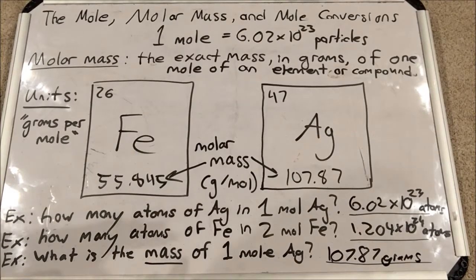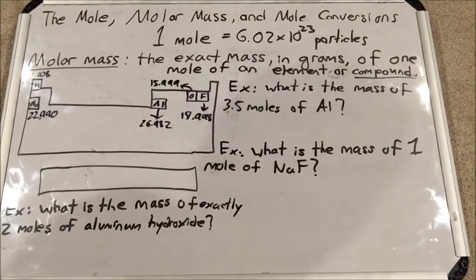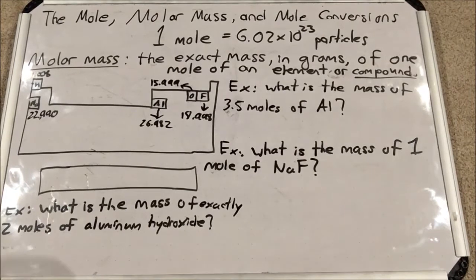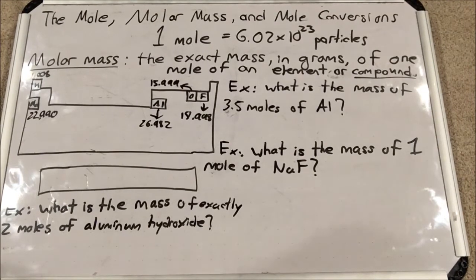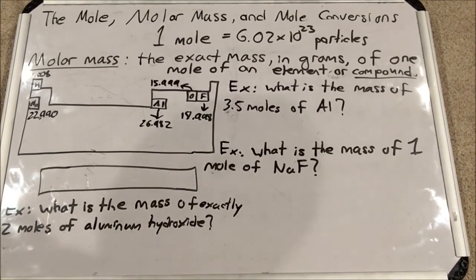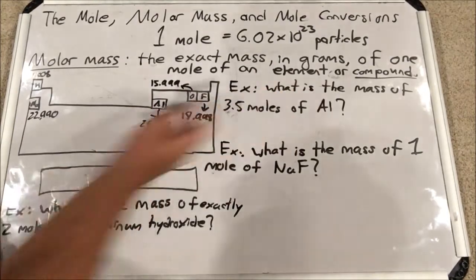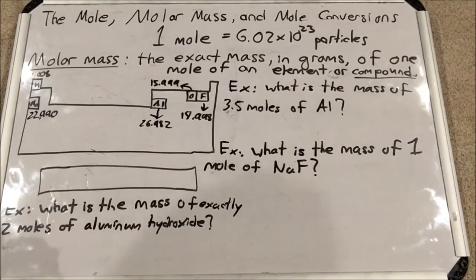So now you see how the mole relates to mass. Let's see how to find these numbers and use them on the periodic table when you're asked particular questions about molar mass. For example: what is the mass of 3.5 moles of aluminum?